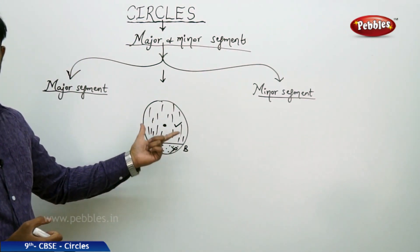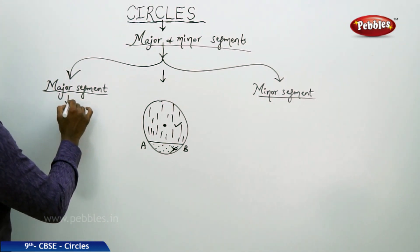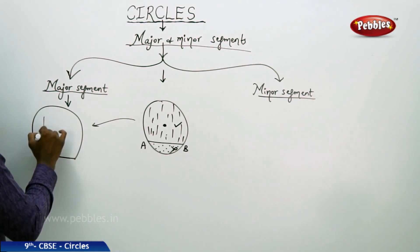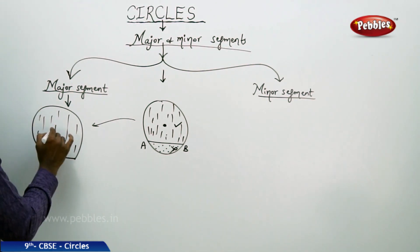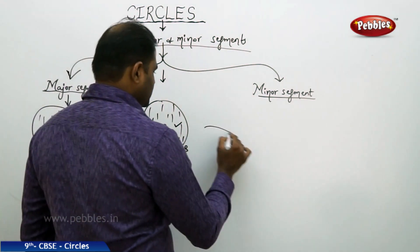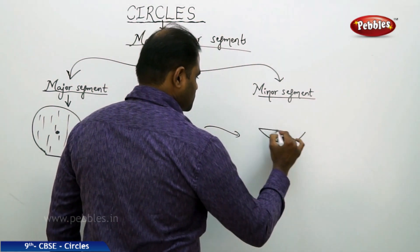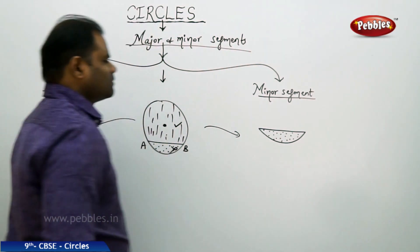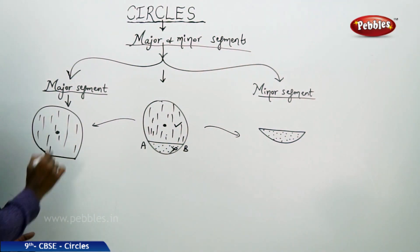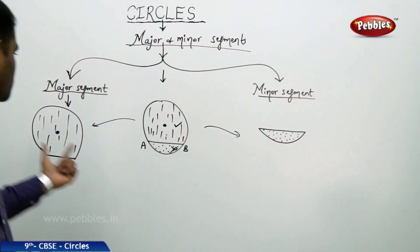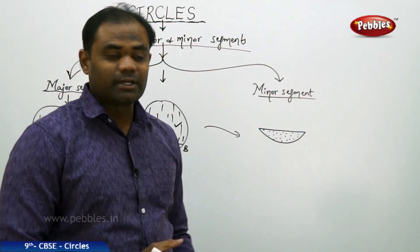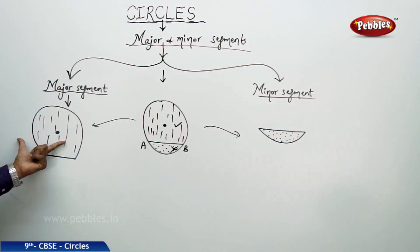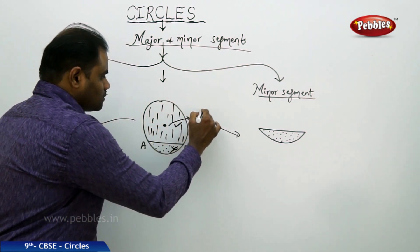Let's first take the segment which has the center of the circle — that is my first case — and the segment which does not have the center of the circle is my second case. The segment which has the center involved is called the major segment, and the segment which does not have the center involved is called the minor segment.